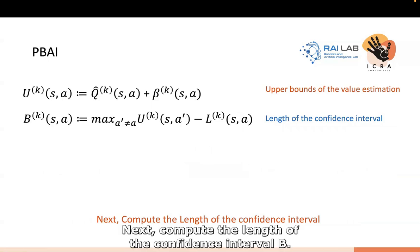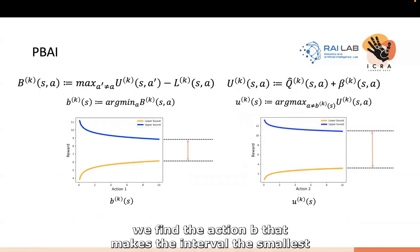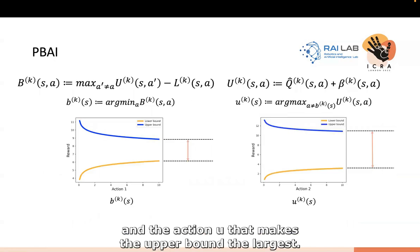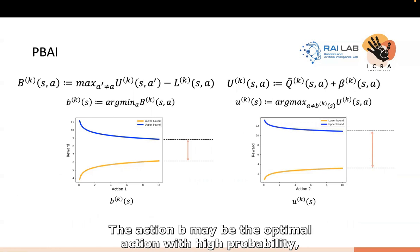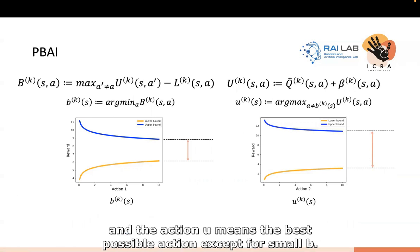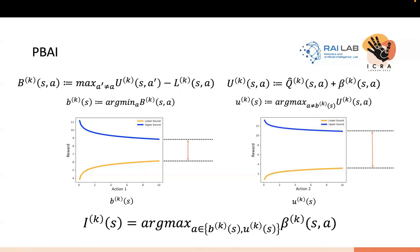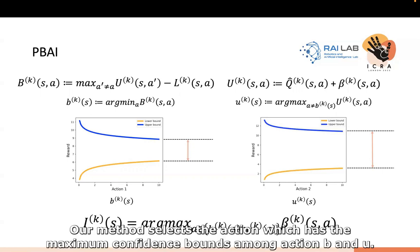Next, compute the length of the confidence interval B. We find the action b that makes the interval the smallest and the action U that makes the upper bound the largest. The action b may be the optimal action with high probability and the action U means the best possible action except for b. Our method selects the action which has the maximum confidence bounds among action b and U.